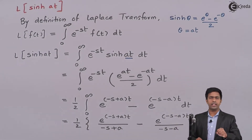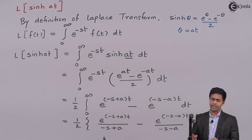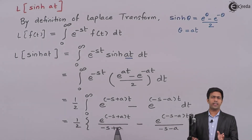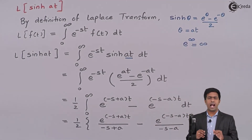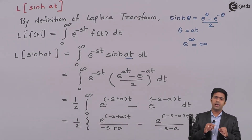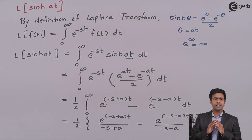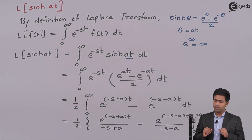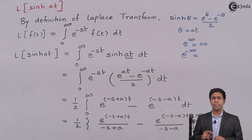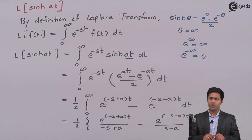Before substituting the limits, let's observe the terms. If we substitute the upper limit infinity into the first term, we get -(s-a) · infinity in the exponent. Since infinity times a finite term is infinity, e^(infinity) gives infinity, which is not acceptable. Therefore, we need to convert this power to minus infinity, because e^(-infinity) = 0, which gives a finite value of 0.